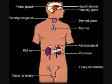Parathyroid Hormone. Gland: Parathyroid Glands. Function: to increase blood calcium levels by stimulating osteoclasts to break down bone matrix.